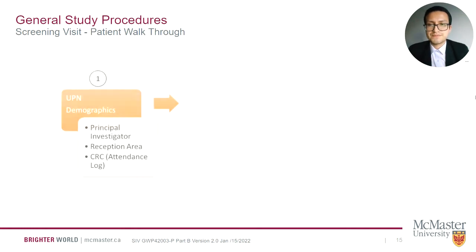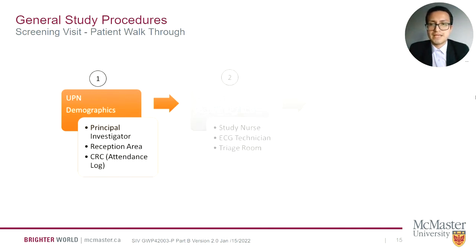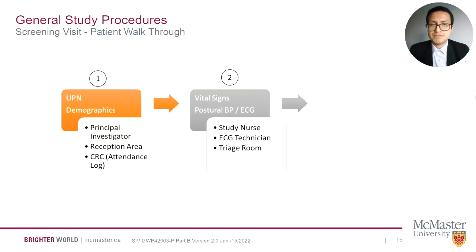Screening visit walkthrough. The first step is the unique participant number, UPN, and demographics. The principal investigator will allocate a UPN for each participant; from here, only the UPN will be used for identifying the participant. The CRC will complete the attendance log and obtain demographic information from the patient. Next, vital signs and postural blood pressure will be measured by the study nurse, and the ECG technician will perform an ECG. These procedures will be done in the triage room before the patient meets the principal investigator to evaluate eligibility.